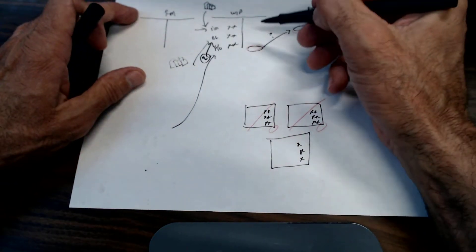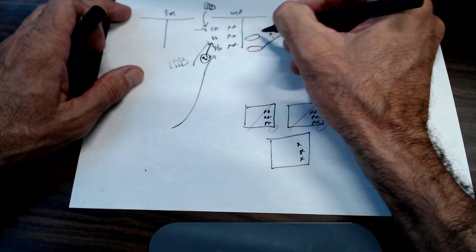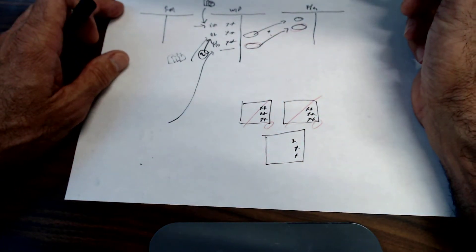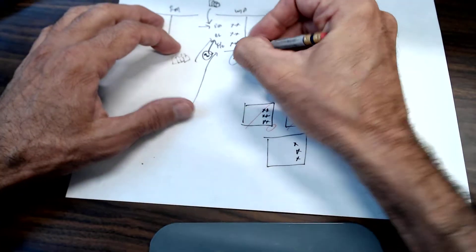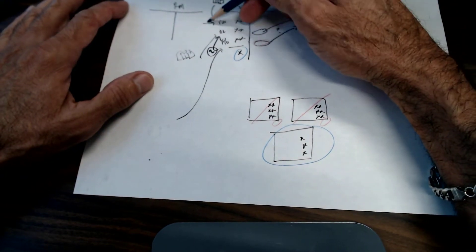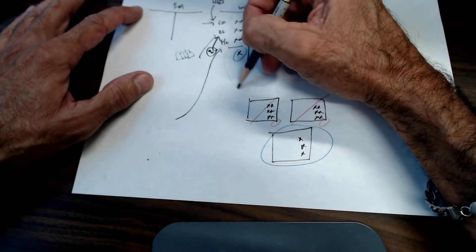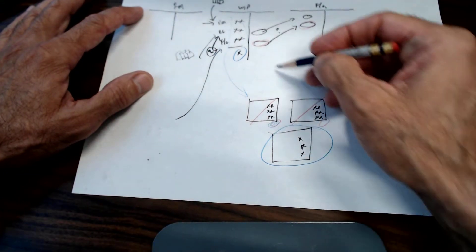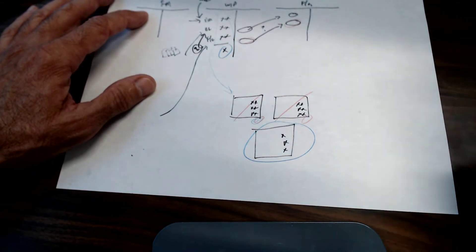We don't even have to wait until month end — whenever a job is finished we can transfer it, making this kind of a real-time accounting system. There'll still be a balance in work in process representing jobs still in progress. We're adding materials, labor, and overhead to work in process, and when a job is done we transfer that total cost to finished goods, where it sits until sold and then moves to cost of goods sold.